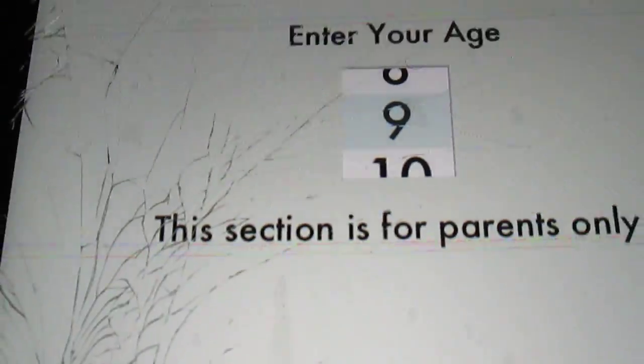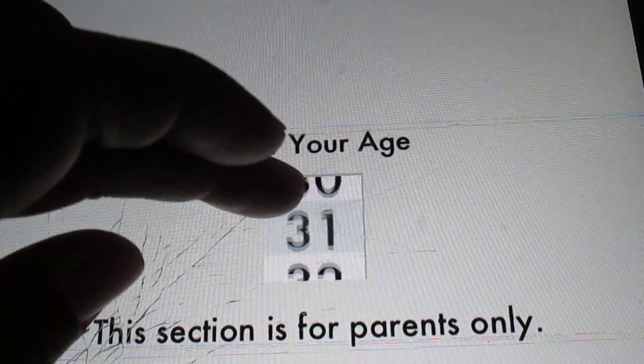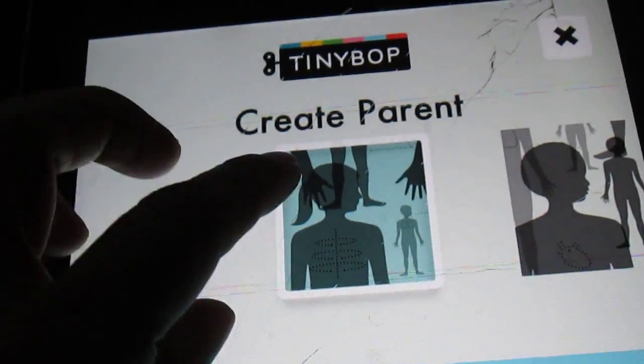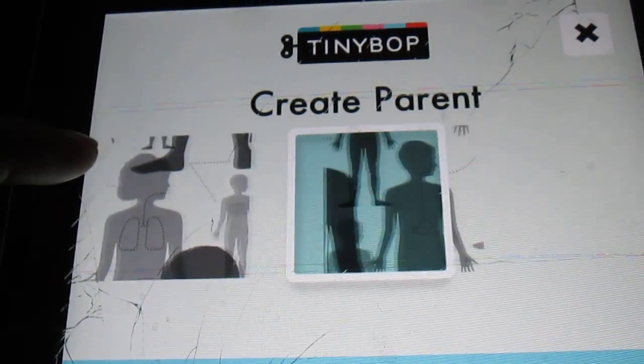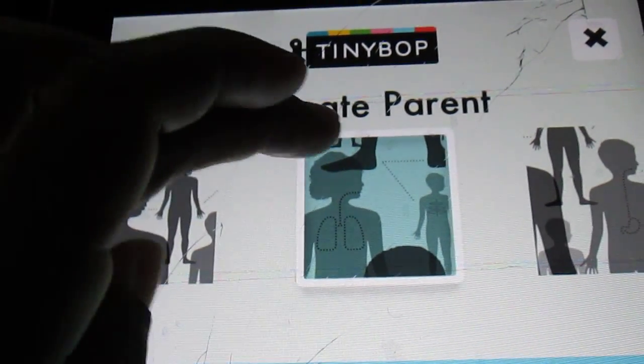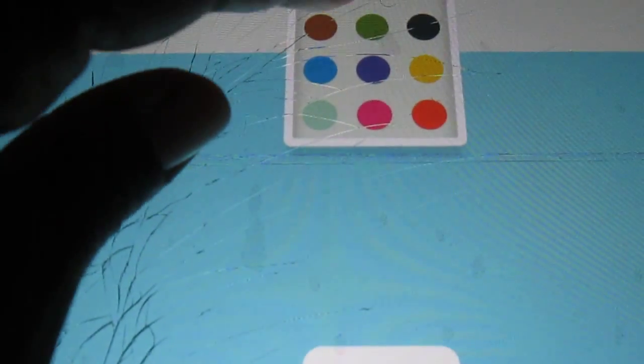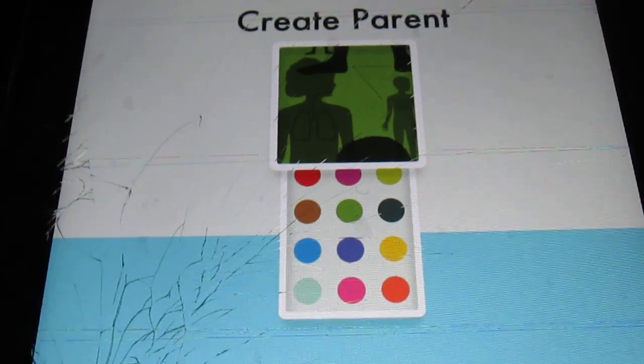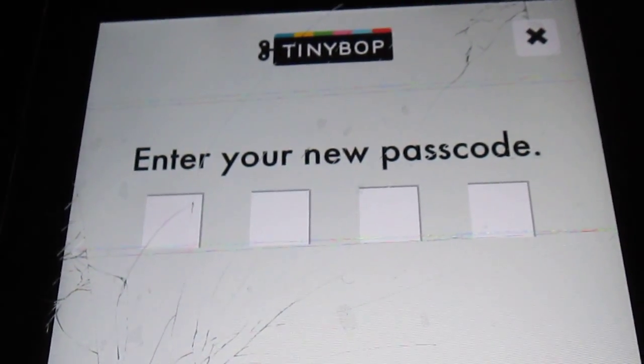And I'm trying to hit—oh, I hit the create a parent. I'm sorry, so this section is for parents only. Enter your age. I'm not embarrassed. Create a parent. Since I am the mom, I'm gonna go to this little joint here. I'll go to this one and hit it, this at the bottom, and I'll do the green one. So we'll do mom. Enter a passcode—one, two, three, four, one, two, three, four.